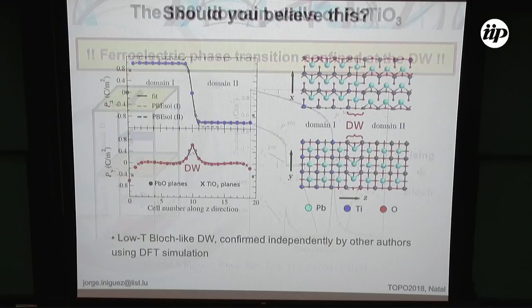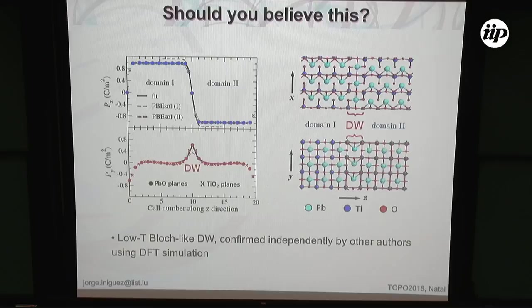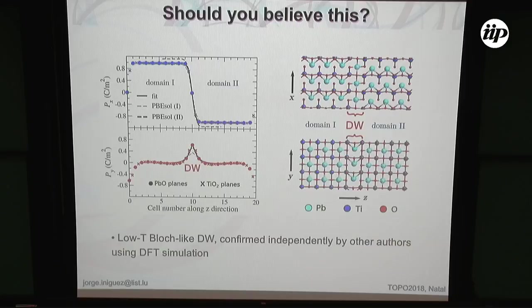To see that in more detail: here you have a picture of the atoms — domain to the left, domain to the right — showing the basic polar distortion of lead titanate, which consists of lead moving off-center upwards in one case and downwards in the other. From this view you don't see anything at the domain wall. But if we look from the top, at the domain wall plane, you see a displacement of the lead atom — the polarization of the domain wall looks very much like the polarization of the domains, but confined to a single unit cell.